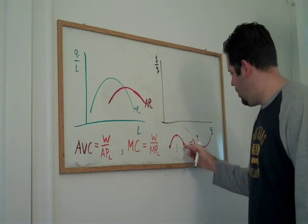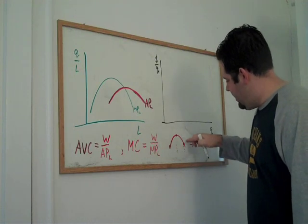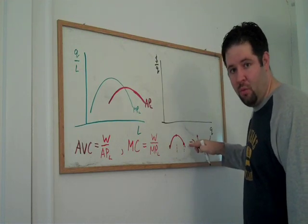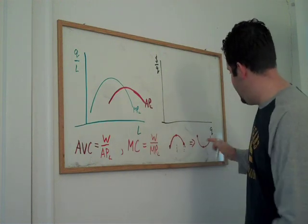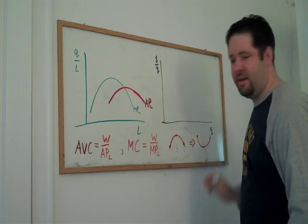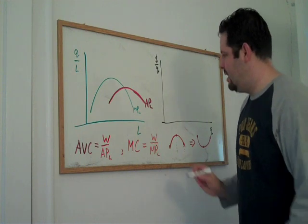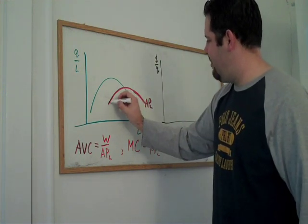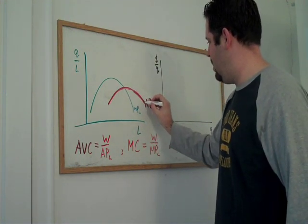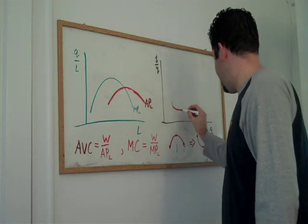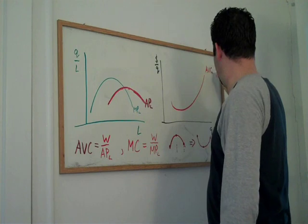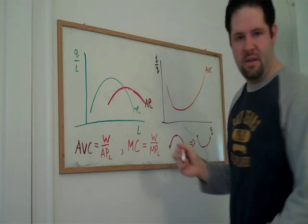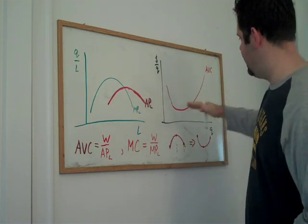When we're up here at a high labor level, we get a smaller number. We divide by the smaller number with the same wage, so we end up increasing back up again. This average product curve turns into an average variable cost curve here with this U shape. Inverted U turns into a U shape.